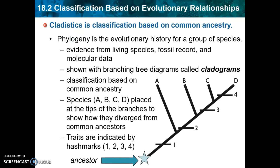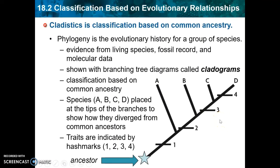The goal is to classify organisms by how they're related to each other, and we use a diagram called a cladogram. A cladogram has species at the tips of its branches — A, B, C, and D represent four different species that we are grouping together. We're classifying based on how they have different traits in common with each other, and the traits are represented by hash marks labeled 1, 2, 3, and 4.